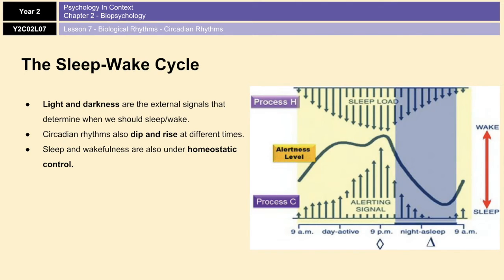That drive for sleep, that homeostatic drive for sleep, increases gradually throughout the day, and then it reaches its maximum in the late evening, which is when most people fall asleep. Makes sense because in the late evening, that's when you've been awake the longest, and you've used up the most energy, so you start to become the most sleepy.